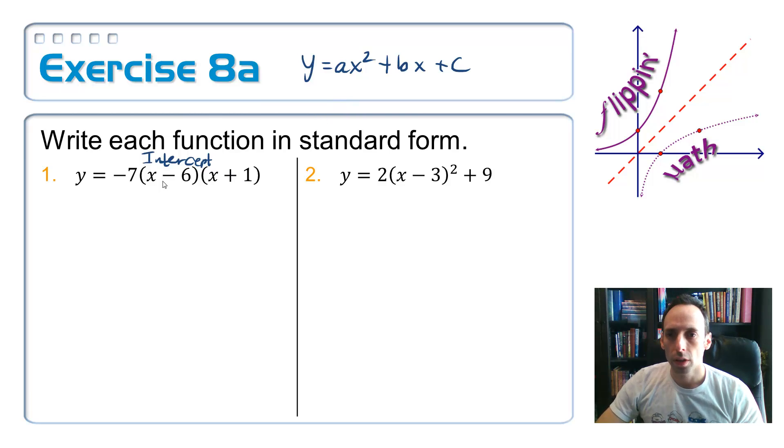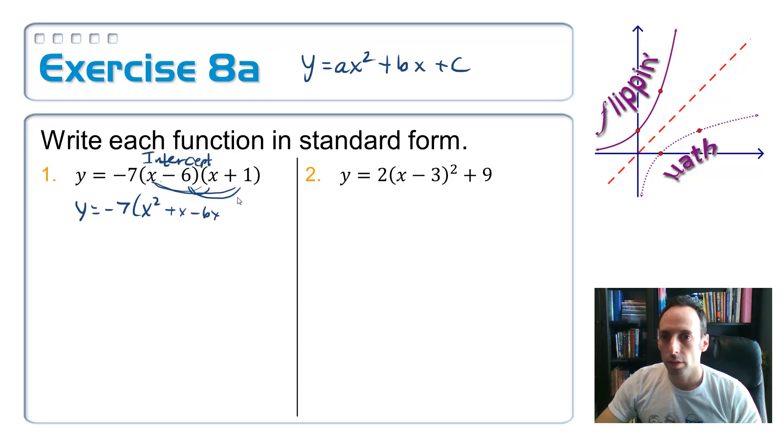So to get it from intercept form into standard form, piece of cake. All we have to do is expand out this, what's it called, foiling, sure. So, y is equal to negative 7. Let's foil this out. x squared, that's the first set of terms, and then plus x, and then minus 6x, and then minus 6.